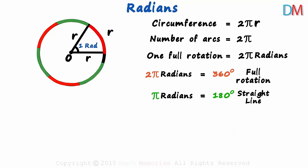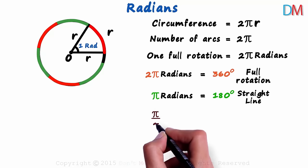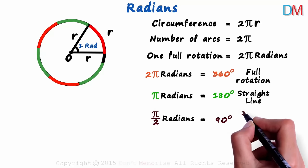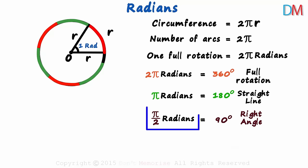And what about a right angle? If we divide this equation by 2, we get π over 2 radians equal to 90 degrees. So a right angle is equivalent to π by 2 radians.